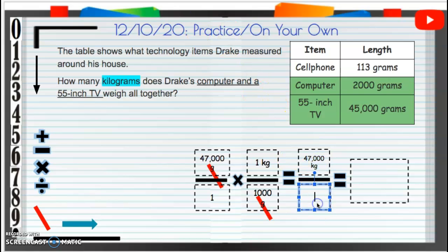Then down below, one times one thousand is one thousand. 47,000 divided by one thousand—how many times can a thousand go into 47,000? I know one times 47 is 47, so our answer is going to be 47, and we're going to keep that kilograms.